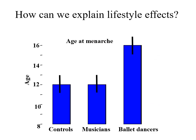But even under good socio-economic conditions, lifestyle effects are obvious. Here we have data on the age of menarche in ballet dancers, who because they're very athletic often control their food intake and have high energy usage, compared to more sedentary musicians and a control population. Girls using a lot of energy reach menarche later than the musicians and the controls.